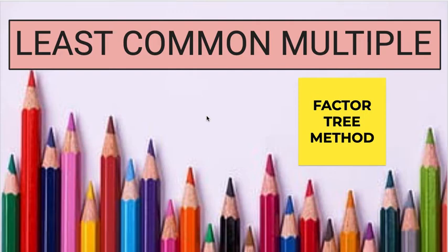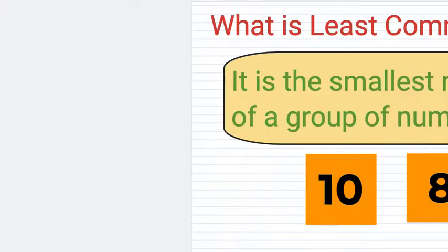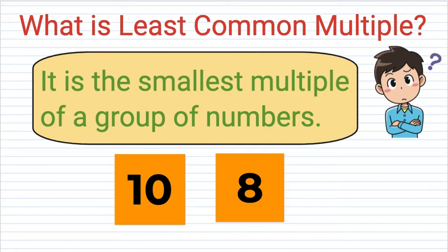We will be discussing least common multiple using the factor tree method. As discussed in the previous video, the least common multiple is the smallest multiple of a group of numbers.